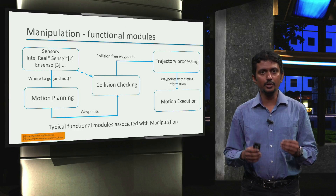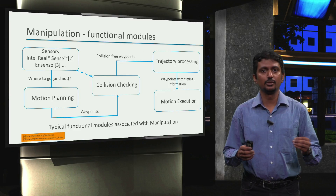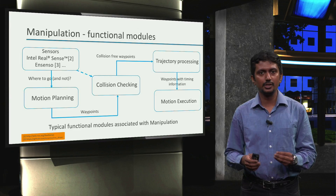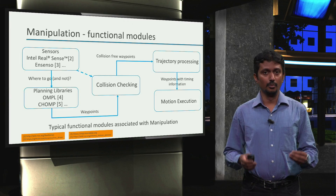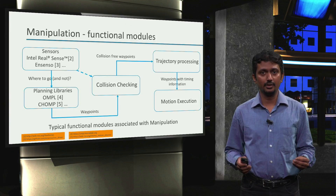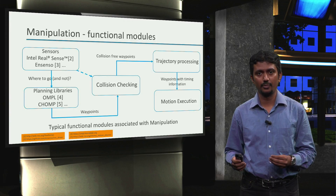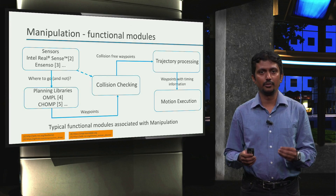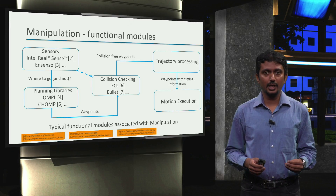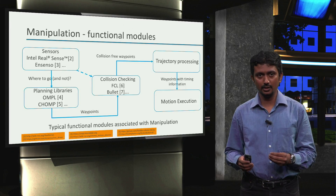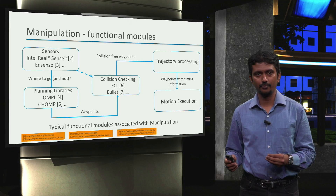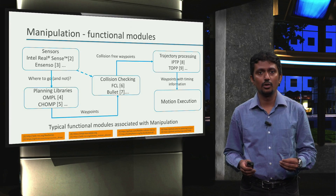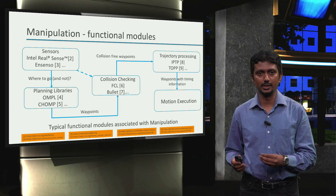For example, we could use Intel RealSense or the InSensor 3D Camera or several other sensors for environment sensing and perception using their corresponding ROS packages. For motion planning, we can use well-known libraries such as OMPL or CHOMP and so forth. For collision checking, we can use the Flexible Collision Library or the Bullet Physics Library. For trajectory processing, we can use the Iterative Parabolic Time Parameterization or the Time Optimal Path Parameterization and so on.